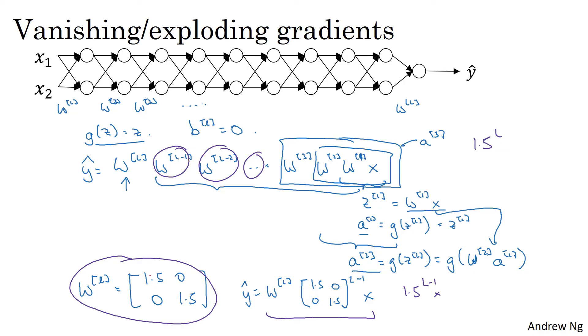Now, conversely, if we replace this with 0.5, so something less than 1, then this becomes 0.5 to the power of L. This matrix becomes 0.5 to the L-1 times x. So if each of your matrices are less than 1, then the activations will be 1.5, 1.5, 1.4, 1.4, and so on, until this becomes 1 over 2 to the L. So the activation values will decrease exponentially as a function of the depth, as a function of the number of layers L of the network. If you have a very deep network, the activations end up decreasing exponentially.